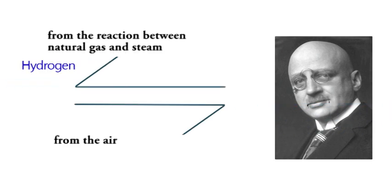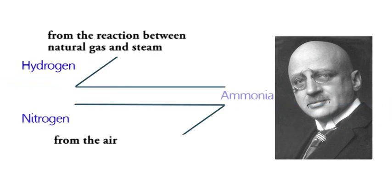Fritz Haber was a German scientist who won a Nobel Prize for inventing the Haber process. The Haber process is used to create ammonia.